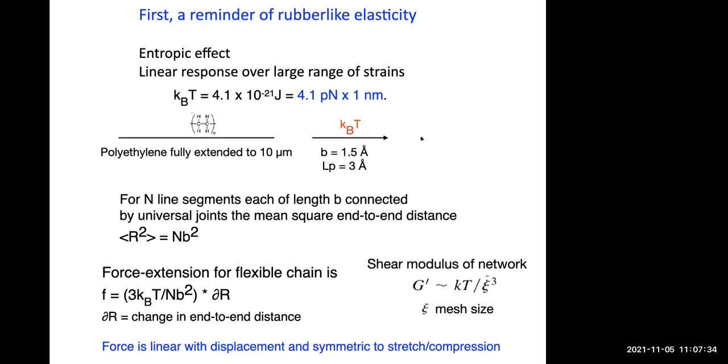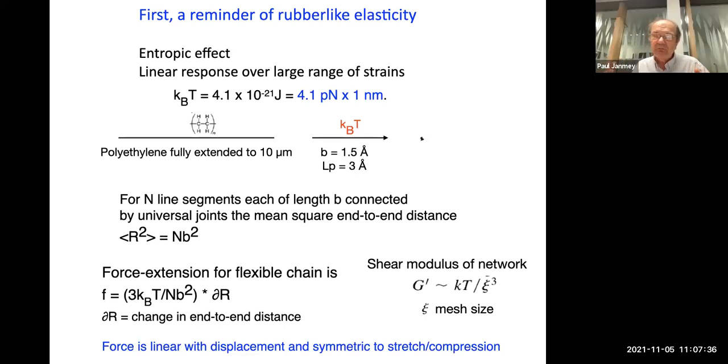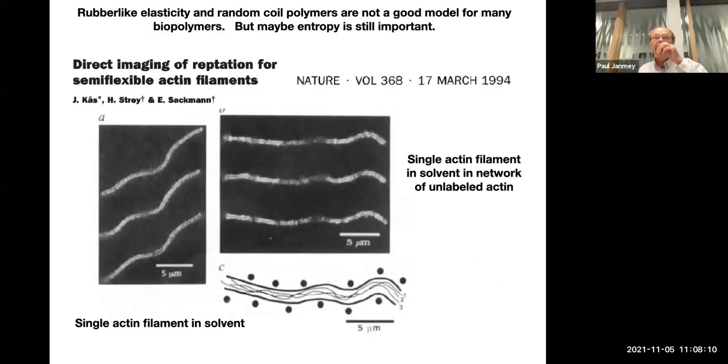As soon as people started to understand the stiffness or structure of the cytoskeleton or the extracellular matrix, it's pretty easy to calculate the mesh size. If you plug in the mesh size of the cytoskeleton or ECM into that G prime equals KT divided by mesh size, you get totally absurd numbers. The actual stiffness of these biological materials is orders of magnitude bigger than rubber-like elasticity tells you it should be. Presumably this has something to do with the stiffness of the polymer.